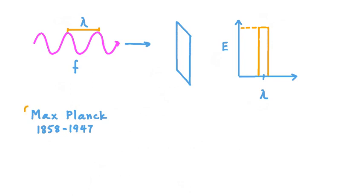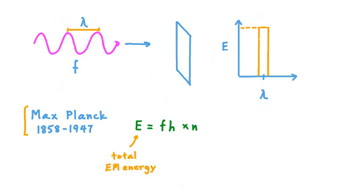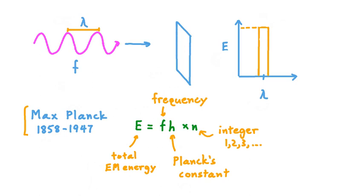At this point, a German physicist by the name of Max Planck came onto the scene. Planck saw that a new theory was needed to explain the recently gathered experimental data. So he came up with this idea: the energy E of electromagnetic radiation, Planck said, is equal to the frequency f of that radiation multiplied by a constant we call H, all multiplied by an integer value that we can call N. In this equation, capital E represents the total electromagnetic energy involved. F is the frequency of the electromagnetic radiation. H is a constant value that came to be called Planck's constant, and N is an integer value — 1, or 2, or 3, and so on.